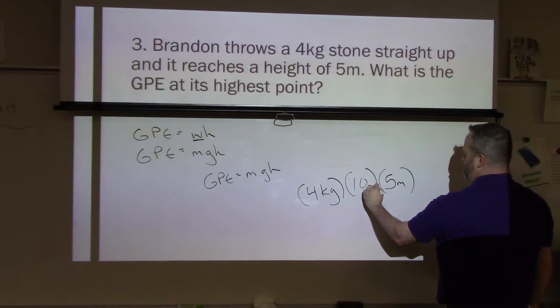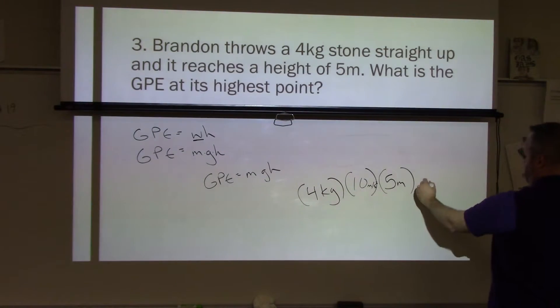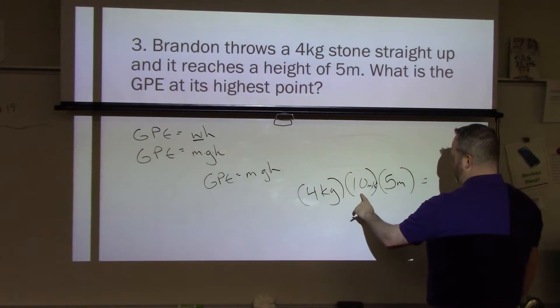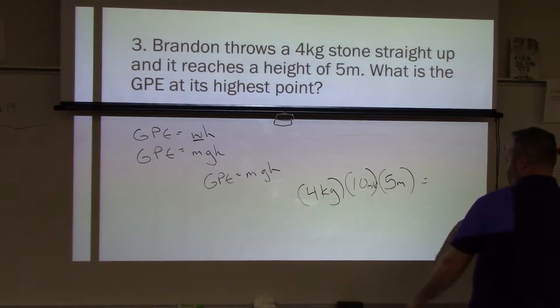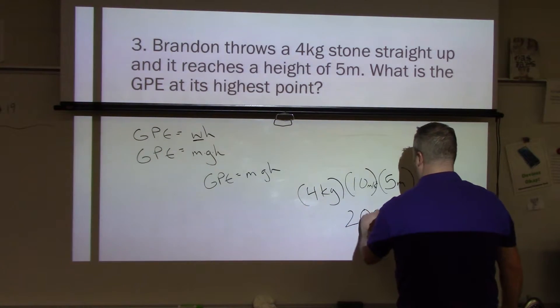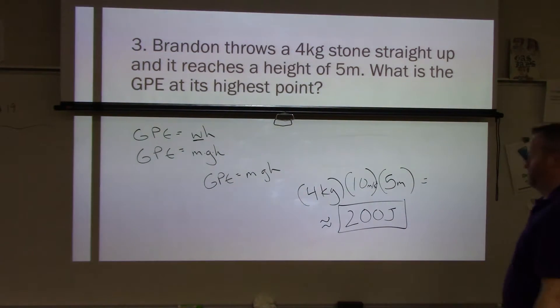Now, I should have written meters per second squared here, because this is acceleration. But let's just go ahead and find what the number would be. 4 times 10 is 40. 40 times 5 is going to give you a total of 200. So we have 200 joules, or approximately 200 joules, because I rounded that to 10. And that is my answer for that question.